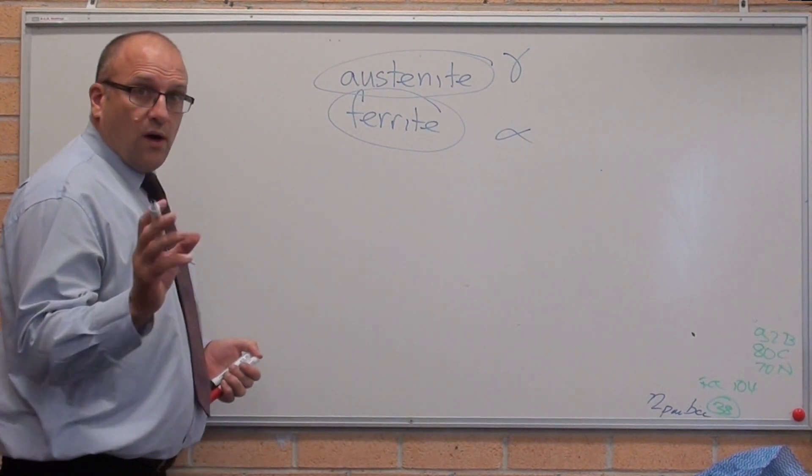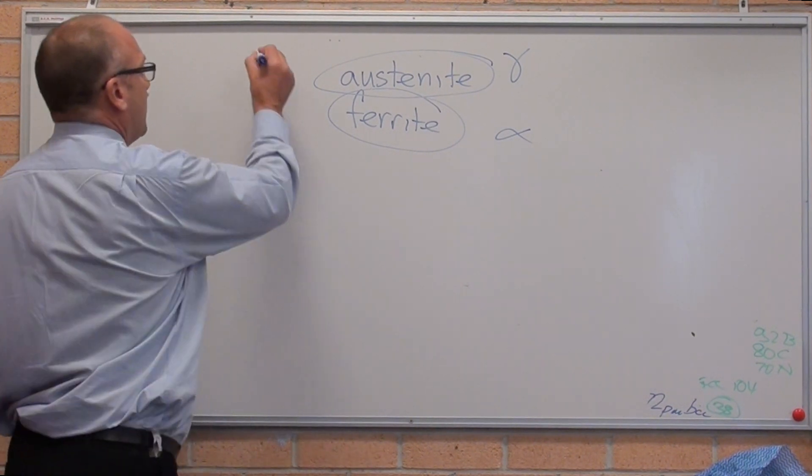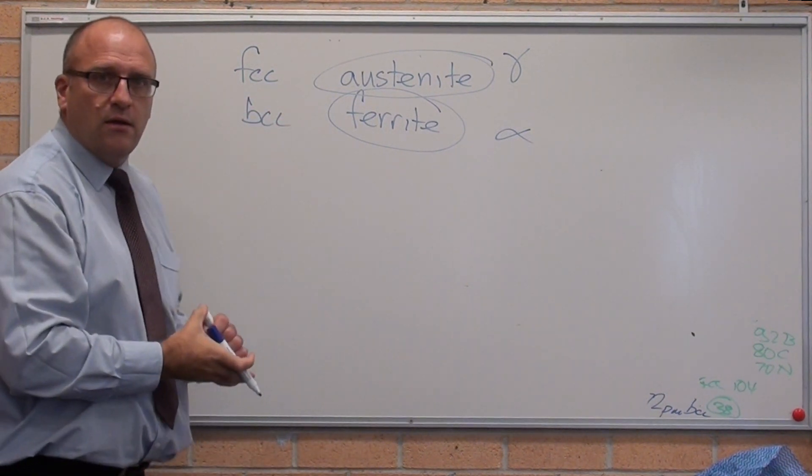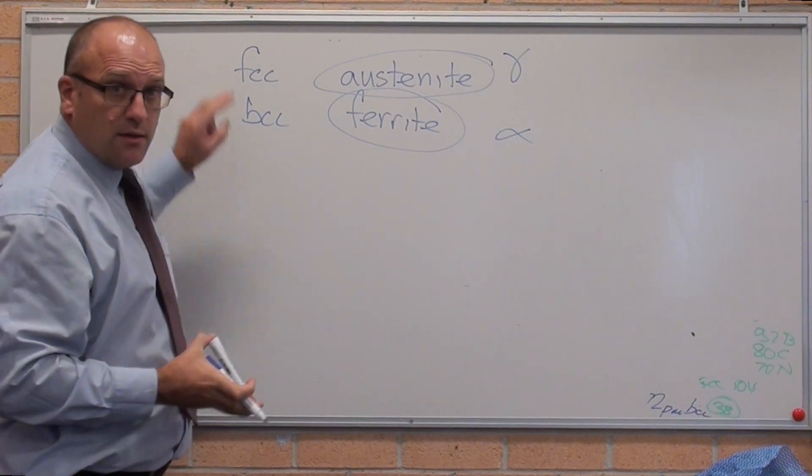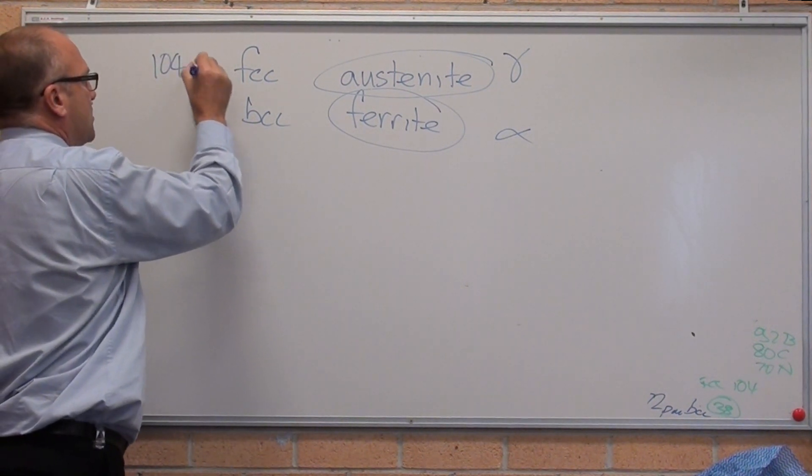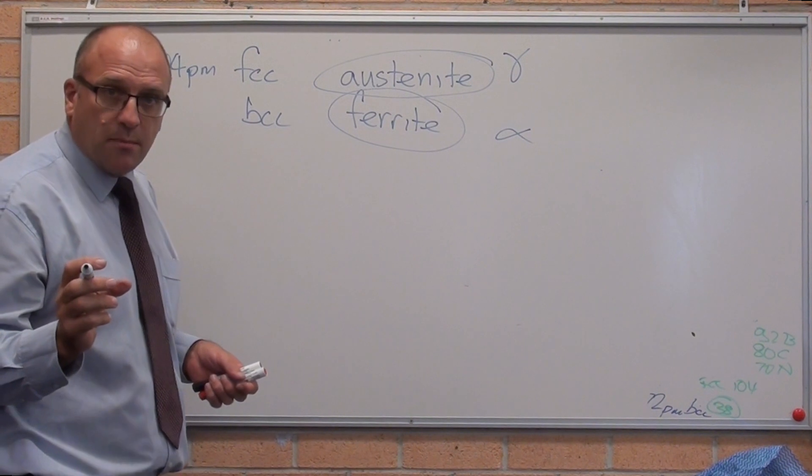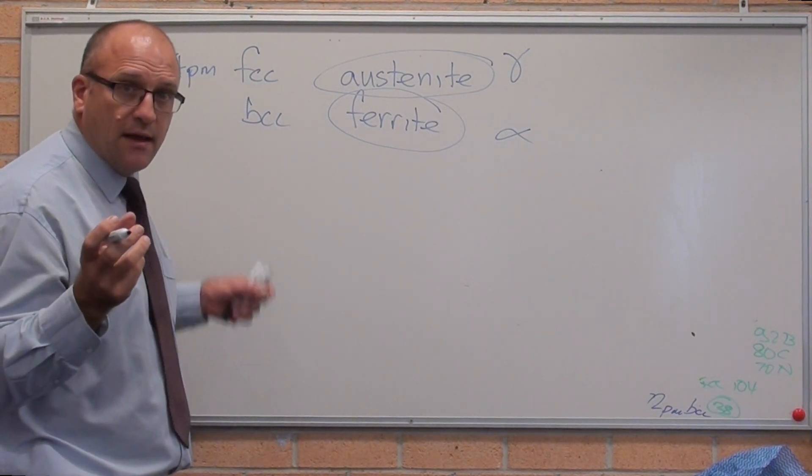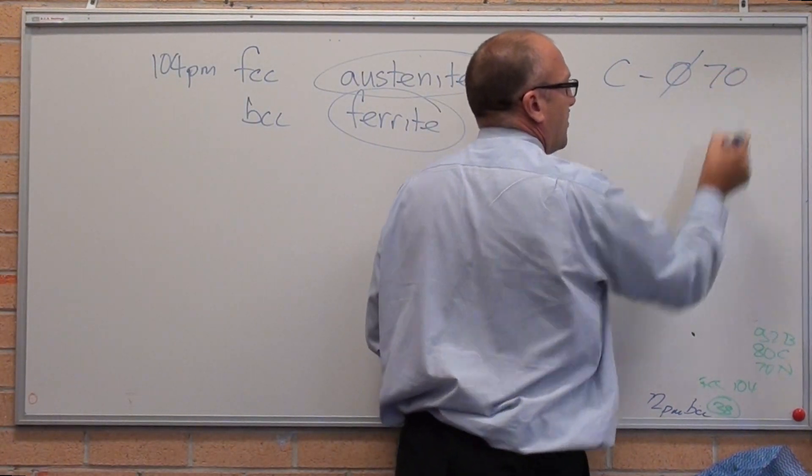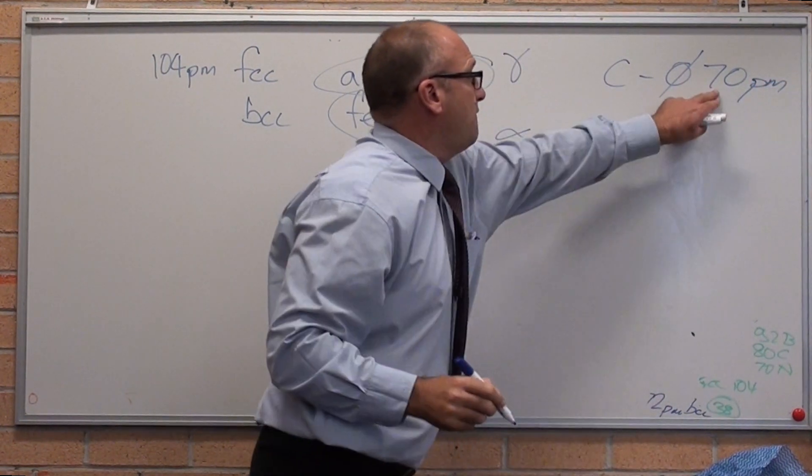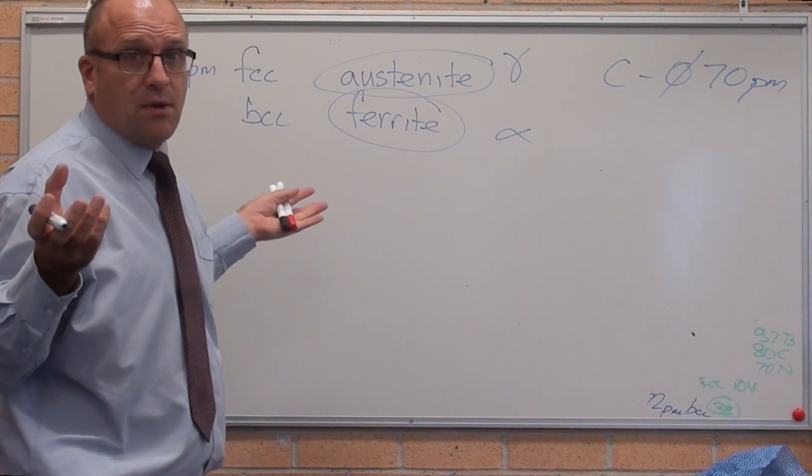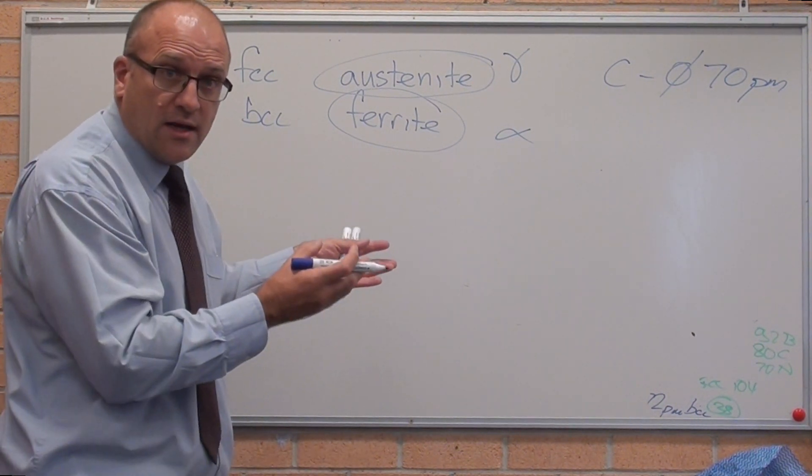So why austenite is face-centered cubic? Let me put it this way. Ferrite is body-centered cubic. Face-centered cubic austenite, the gaps in between each atom are all the same diameter. They are - you don't need to know this number for the HSC - but they're 104 trillionths of a meter in diameter. It's the size of the atom you can fit in there. Carbon, the atomic diameter of carbon is 70 picometres. So you can fit the carbon atom quite happily in the gap in the austenite and it just sits there happily. Carbon is really soluble in austenite.